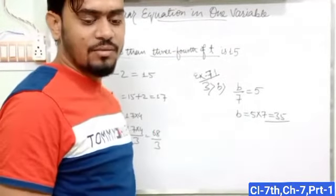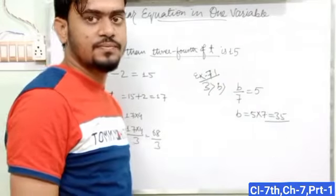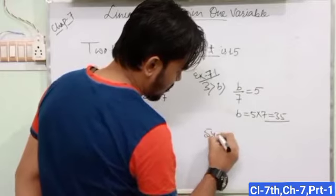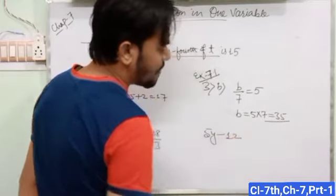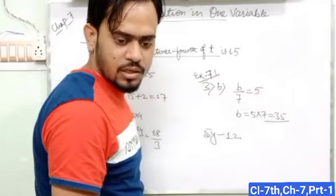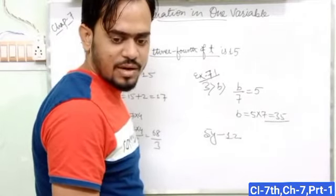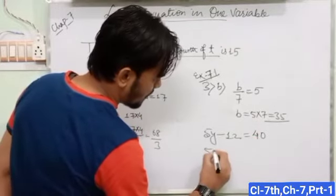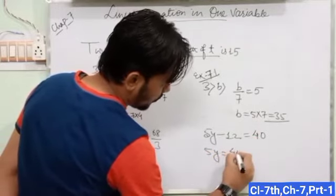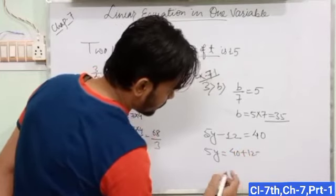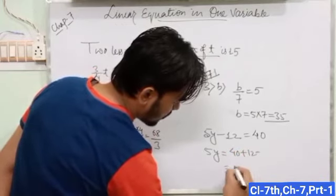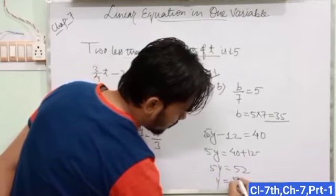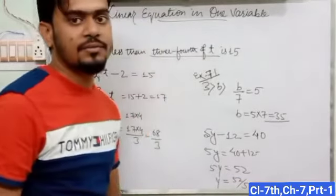The next question is: if 12 is taken away from 5 times y, you get 40. 5 times y means 5y, and 12 is taken away means 5y − 12 = 40. Now 5y = 40 + 12 = 52, so y = 52/5.